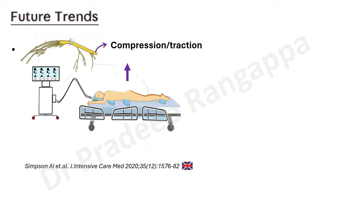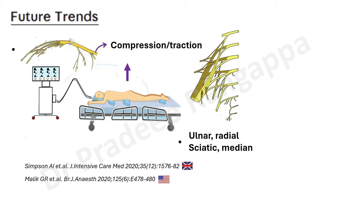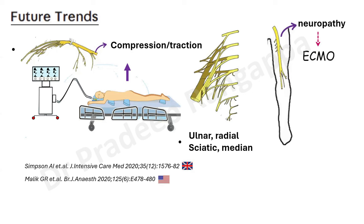Brachial plexus injury and injuries to the ulnar nerve, radial nerve, sciatic and median nerve have been reported from various studies due to prone positioning and other interventions. Due to increased use of ECMO, a new type of neuropathy has been described — mainly femoral neuropathy — increasingly recognized in patients put on ECMO. So this is a newer observation in the context of prone positioning and ECMO interventions.